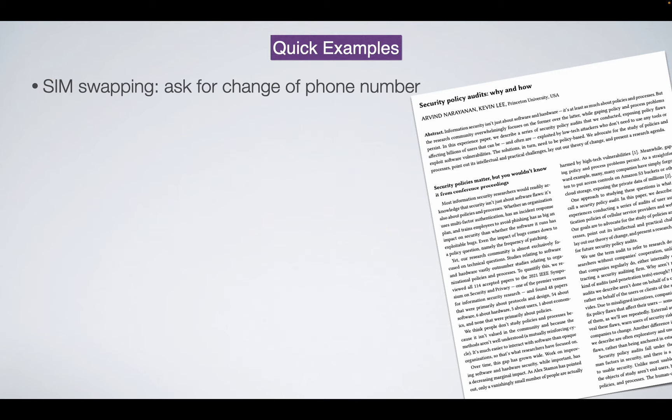To verify identity, carriers would ask things like your name, address, and challenge questions. One challenge question was: 'What are the last three phone calls you received?' This turns out to be a bad policy — the attacker can simply call the target three times, then tell the carrier their own numbers. The attacker can control that information, which means the verification is insecure. This is similar to the Amazon credit card example: you don't know the information, but you can set it yourself.